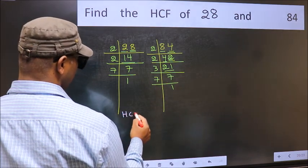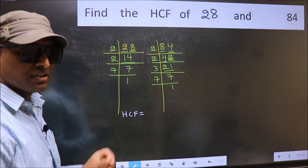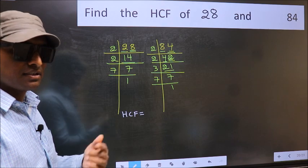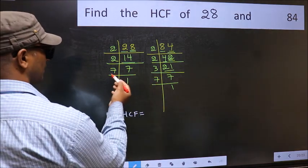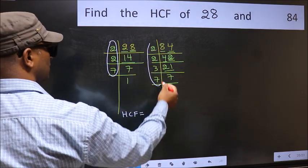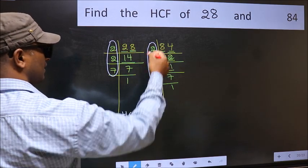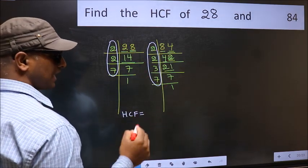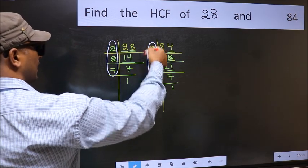Therefore, our HCF is the product of the numbers which should be present in these two places, that is over here and also here. Here and here. So now, let us find the numbers which should be present here and here.